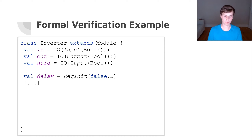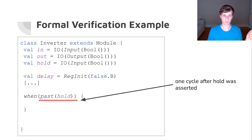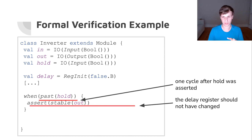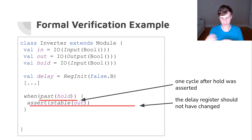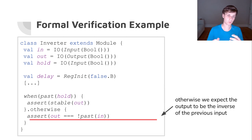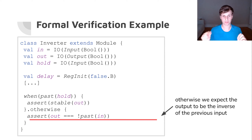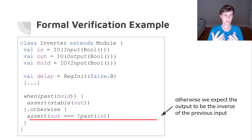For our inverter, let's look at the internal signals and come up with properties that should always hold. One example: when hold was true in a previous cycle — past(hold) — then we want the output not to have changed. Otherwise, the output should be the inverted input from the previous cycle, because we have an inverter. This basically specifies the expected behavior.